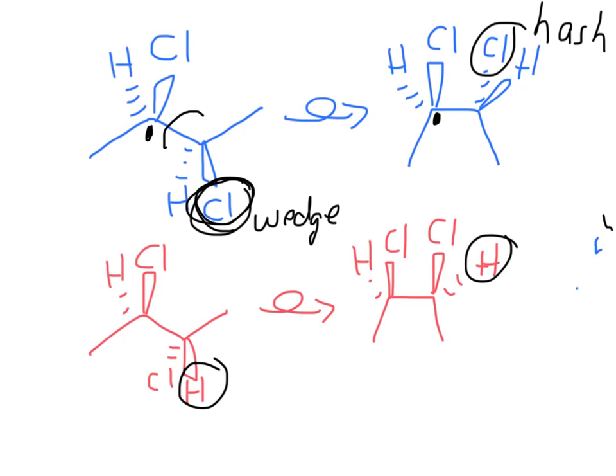When we do the bond spin around the middle bond, everything changes on the right carbon only, but not on the left carbon. So the wedged chlorine ends up in the back. The hashed hydrogen ends up flipping over and ends up in the wedged position.